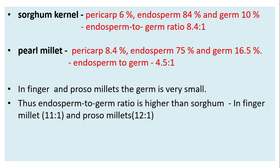In the caryopsis type, the pericarp is completely fused to the seed. Sorghum and pearl millet are caryopsis type. Sorghum kernel: pericarp 6%, endosperm 84%, and germ 10%; endosperm-to-germ ratio is 8.4:1 — remember this for exams. Pearl millet: endosperm 75% and germ 16.5%; endosperm-to-germ ratio is 4.5:1. In finger millet the ratio is 11:1, and in proso millet it is 12:1, as the germ is very small.